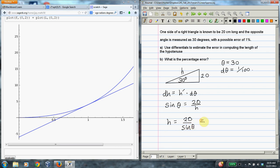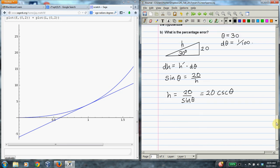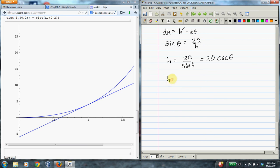And if you want to, you could recognize this as 20 times cosecant θ, just because that's the definition of cosecant, but that's not super important. So let's just write this, 20 csc(θ). All right. So now we just need to do dh, right? So dh is going to be h'. So what is h'?